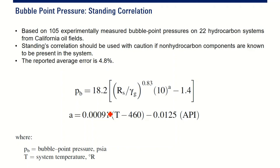Standing used California oil field data. To calculate bubble point pressure, you need RS, gas specific gravity, API gravity, and temperature.